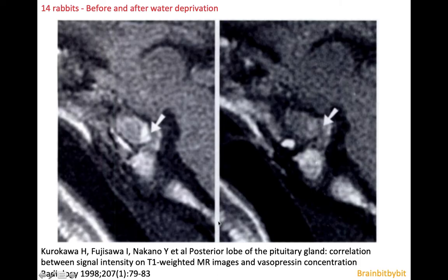We know that the high T1 signal in the posterior pituitary is caused by these vesicles with large proteins, because there have been many studies in the 1990s and around the millennium. For example, a study in Radiology 1998 looked at 14 rabbits before and after water deprivation and also measured antidiuretic hormone concentrations. When ADH concentrations went down, the signal of the posterior pituitary decreased as well.